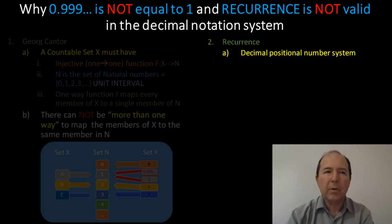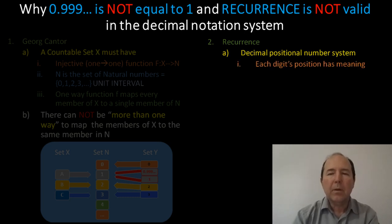Firstly, the decimal position notation system requires that each position of each digit has a particular meaning, and that meaning is very clearly defined. Now, digits to the right-hand side of the decimal point have a diminishing value in orders of magnitude corresponding to the base of that number system.